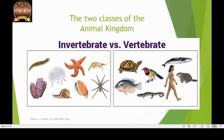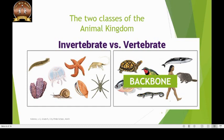In the previous lesson on animal adaptations, you have learnt that the entire animal kingdom may be divided into two groups: the vertebrates and the invertebrates, based on the presence or absence of a backbone. A backbone in vertebrates is a supportive internal skeleton. The presence of the backbone has allowed the vertebrates to develop into a variety of shapes and sizes.